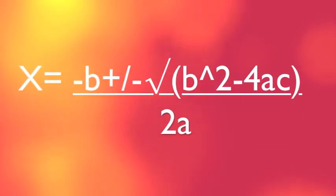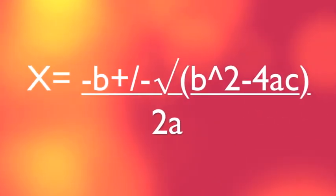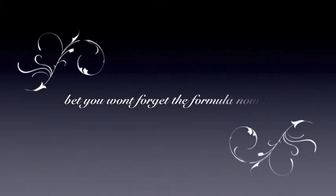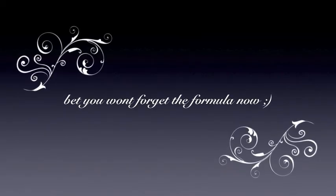Again with us! Negative b plus or minus square root of b squared minus 4ac, all over 2a. One more time with us! Bet you won't forget the formula now, huh?